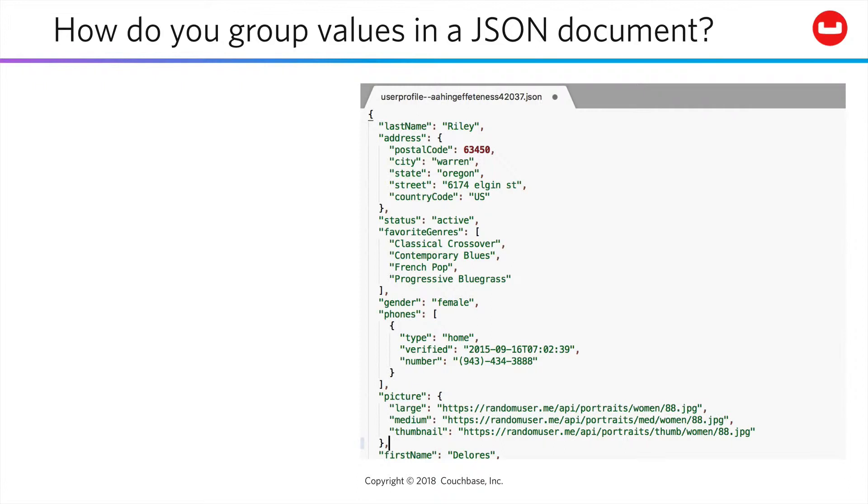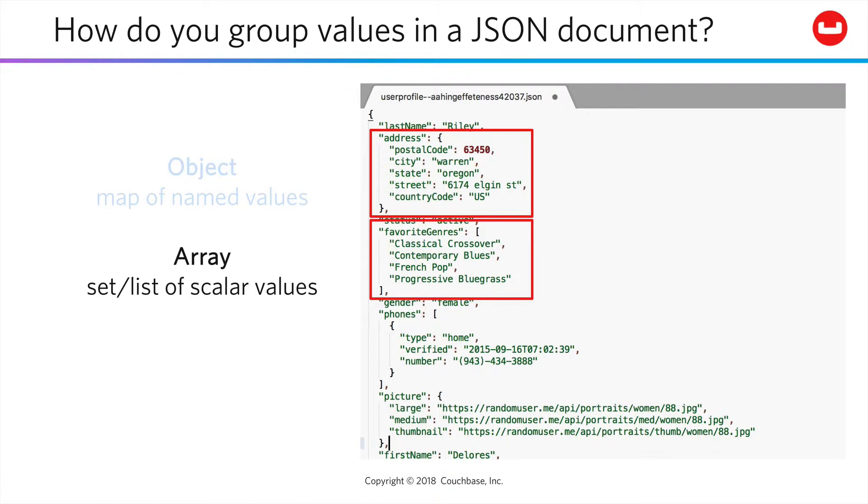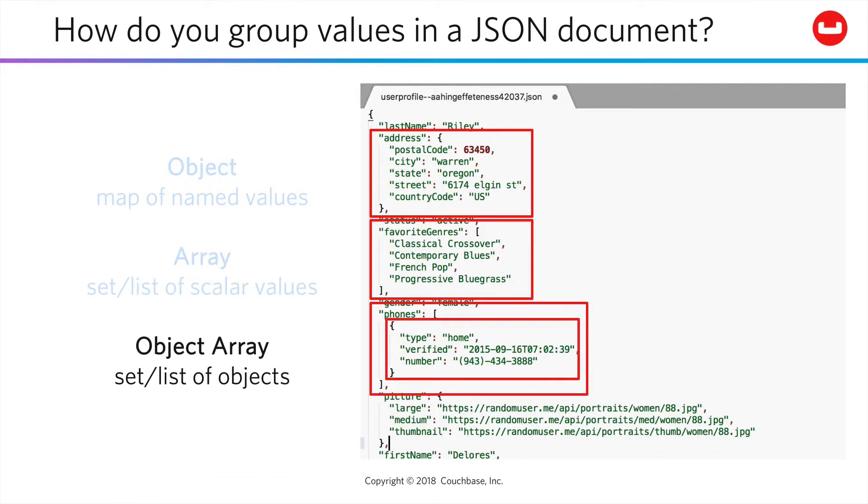But how you do so is straightforward. As we've seen, a JSON document can contain maps of named values, commonly called objects, or can contain sets or lists of scalar values, or can contain sets or lists of objects, all of which can be nested and combined as needed to support the data shape you need.